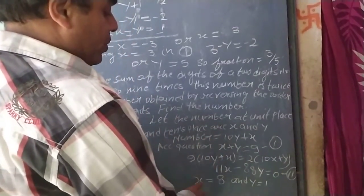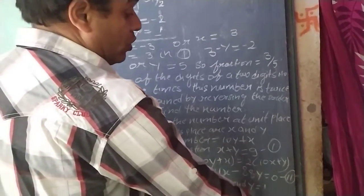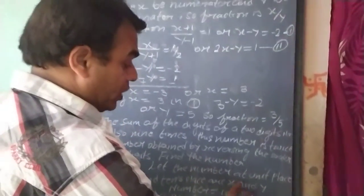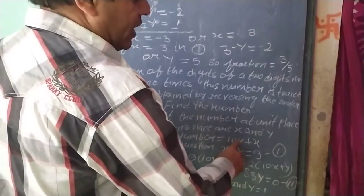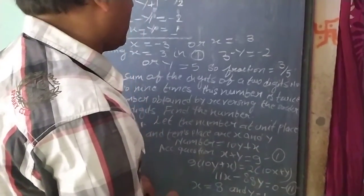After solving, we get x equal to 8 and y equal to 1. So after putting x equal to 8 and y equal to 1, we get 18. 18 is the number.